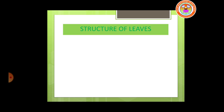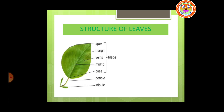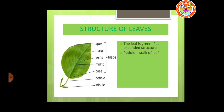Now we will move on to the structure of leaf. The leaf is a green, flat, expanded structure. The stalk of a leaf is called the petiole, and from the petiole the leaf arises. The flattened, widened green part of a leaf is called the lamina. The center vein of the leaf is called the mid vein, otherwise known as the mid rib.